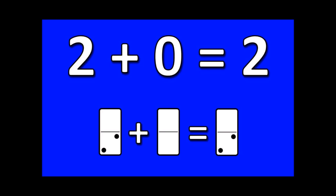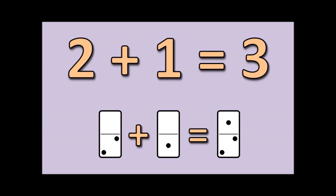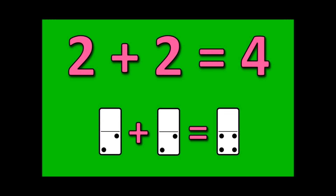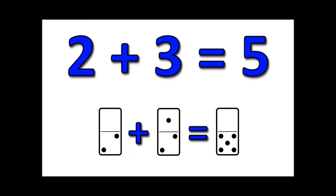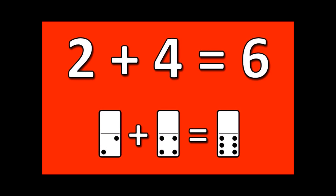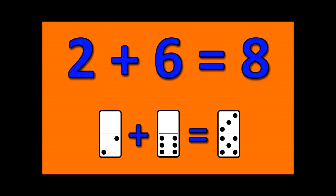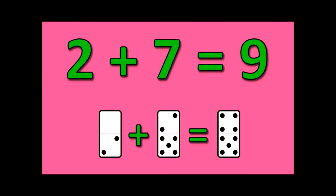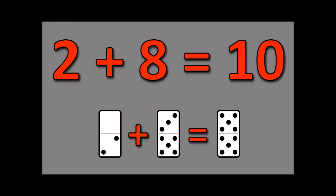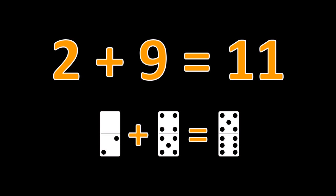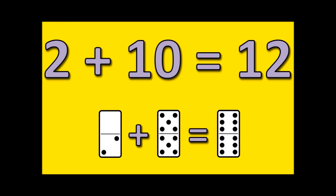Two plus zero is two. Two plus one is three. Two plus two is four. Two plus three is five. Two plus four is six. Two plus five is seven. Two plus six is eight. Two plus seven is nine. Two plus eight is ten. Two plus nine is eleven. Two plus ten is twelve.